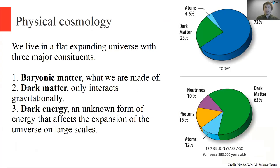Those constituents are baryonic matter — that's the kind of matter that we're made out of, stars, galaxies, etc. — dark matter, which is another type of matter that does not interact with light and only interacts gravitationally, which means we can't observe it directly. And then dark energy, which is responsible for growing the expansion of the universe on large scales. The universe is dominated by dark energy — about 70% of the matter-energy budget. The remaining roughly 30% is matter, and about 80% of that is dark matter, so dark matter dominates the matter distribution of the universe.